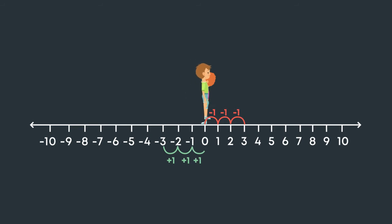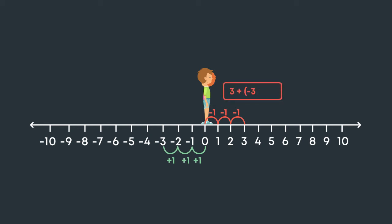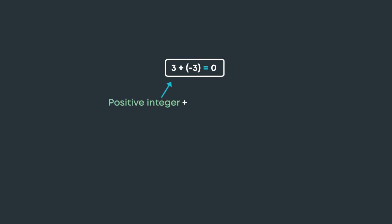Now both walk towards zero. We can represent the steps walked by Abhay as minus three and Rahul as plus three. We can write a mathematical statement for this as: three plus minus three is equal to zero.